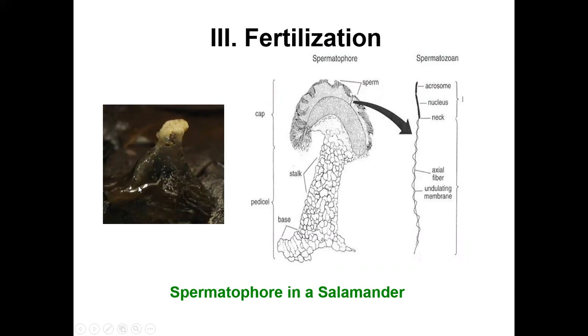Here's what a spermatophore looks like. You can see the base, the stalk, and the cap at the top where all the sperm are located — this is the portion the female picks up with her cloaca. This is an actual spermatophore of a tiger salamander in the wild, showing the proteinaceous base and stalk and the white cap containing millions of sperm that the female will pick up.